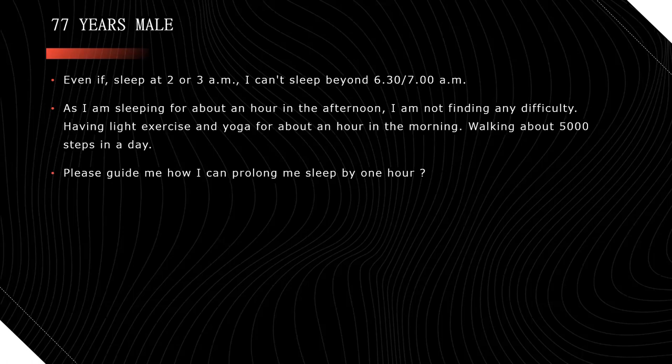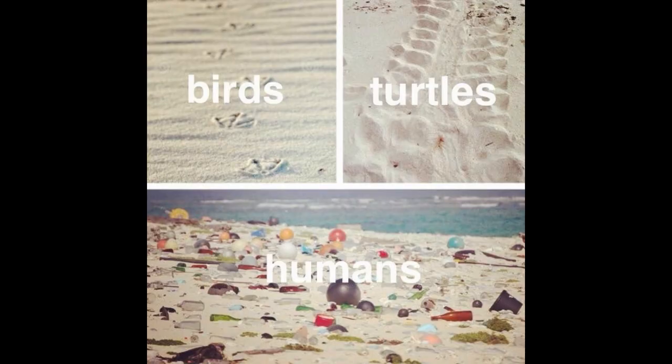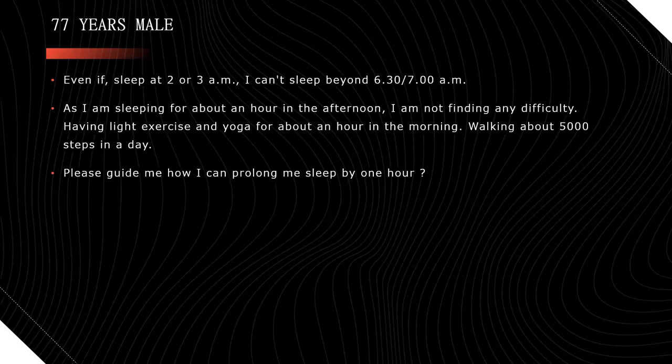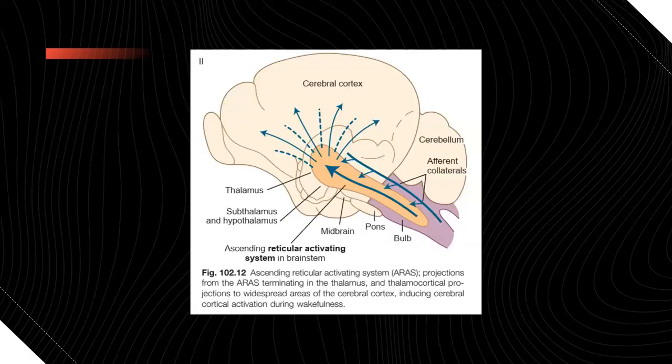There is something called sleep hygiene. Unfortunately, because of so much contamination by light, there is something called light pollution. It is very interesting that we as human beings have created newer types of pollutions. Unlike other animals, we are the most polluting animals on the planet. We have to keep introspecting about it and try to reduce the pollution which we create. There is sound pollution, light pollution, air pollution, water pollution. Light pollution needs to be reduced - with the sunset, we should go into the dark as much as possible.